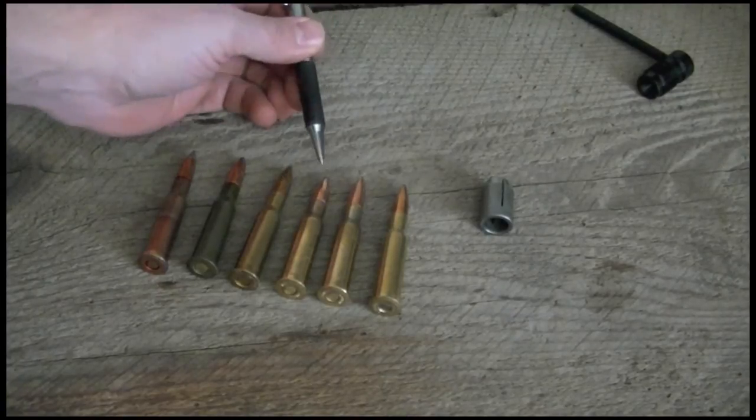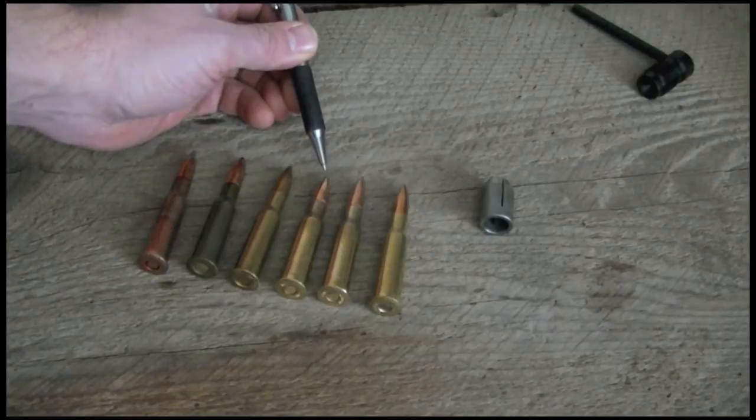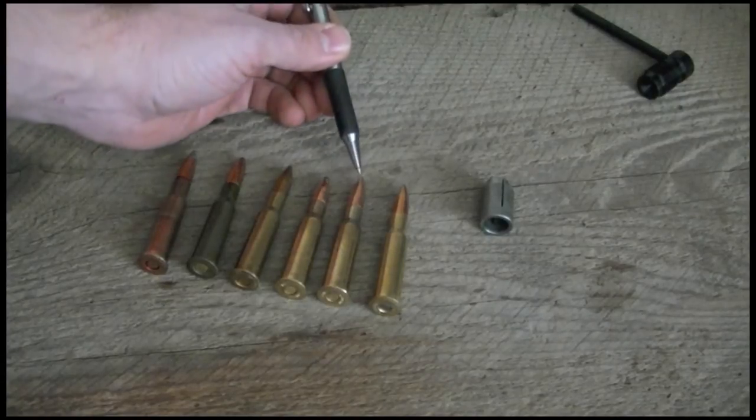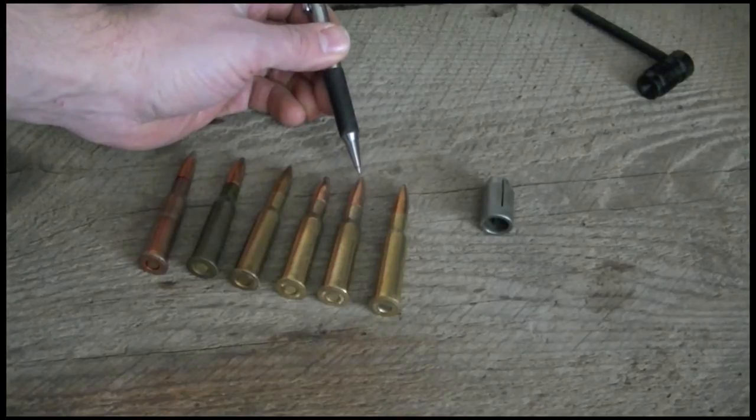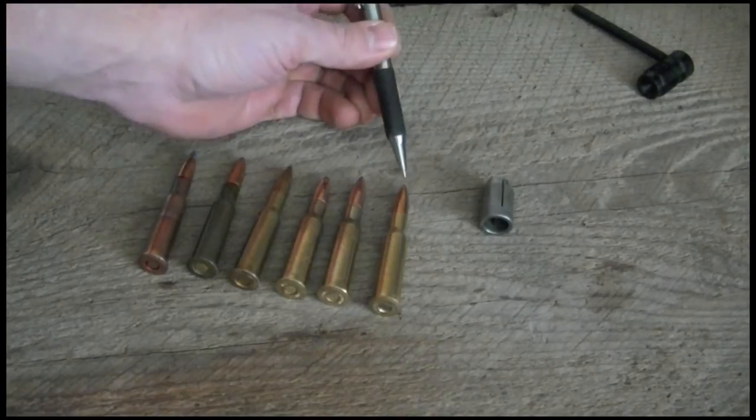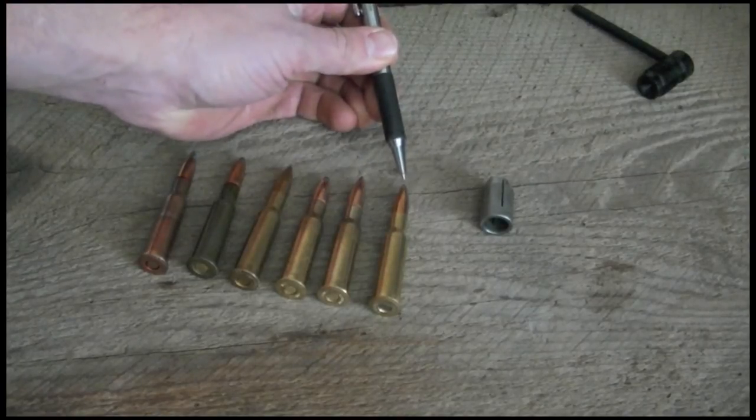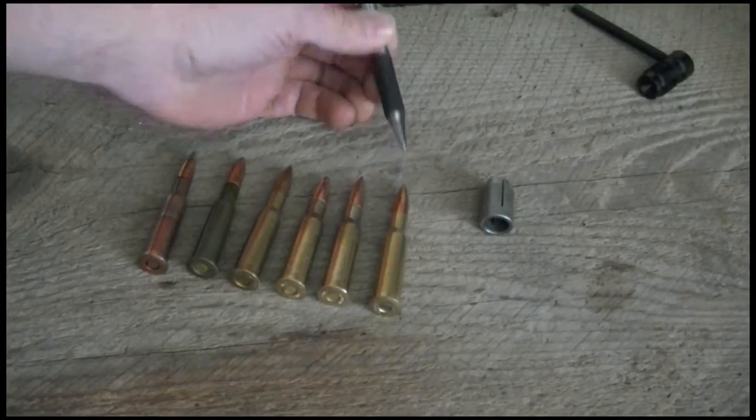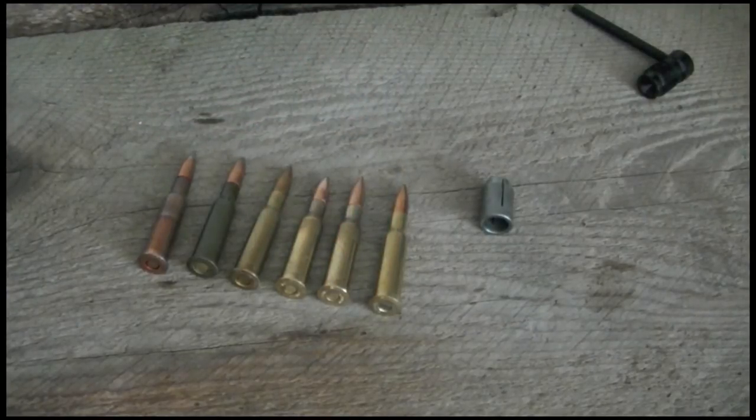It shoots really nice. Next, this little guy has a PPU soft tip. It's 150 grain. And this is a 182 grain full metal jacket. Same company, PPU. And finally one of my handloads with a Sierra Match King 174 grains loaded into PPU brass.